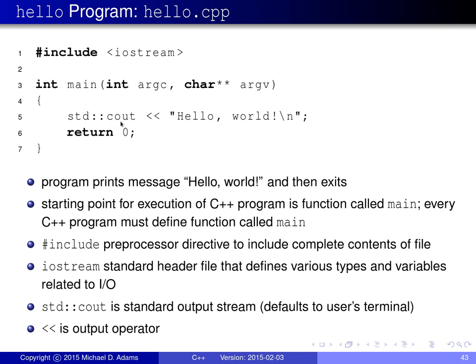The standard output stream, depending on the operating system and how the program is run, might correspond to the user's terminal or console, or it might correspond to a file or some other device. Lastly, we return a value back to the operating system indicating whether the program was successful. The less-than-less-than sign is essentially an output operator — we're outputting a string to the output stream. This is just a very simple example of a C++ program.